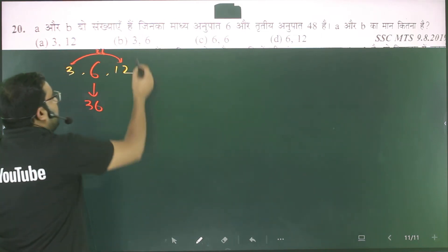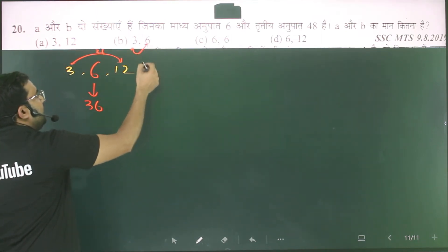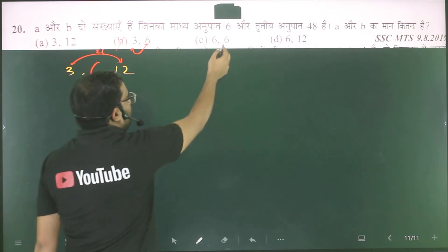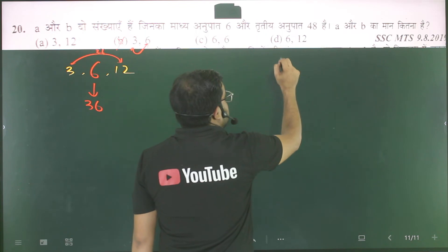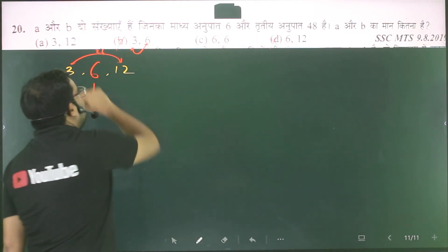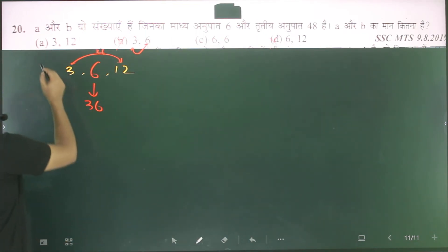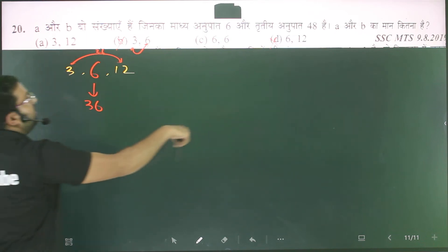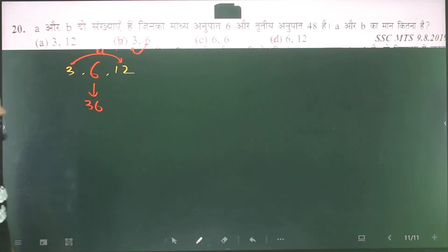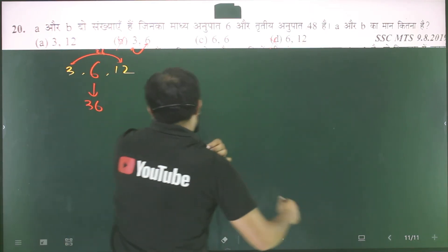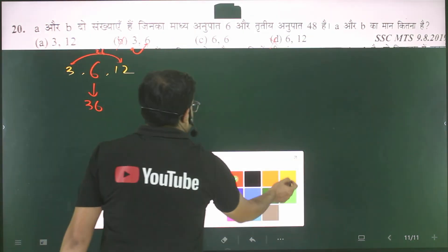So if it is 36, it should be right, this option. This option is not, this option is not, this option which is 36, this option. Our option number A can also be, and option number C can also be. What do we need to do with A and C? We need to do it with 33 and 48. We need to check it in this option first.